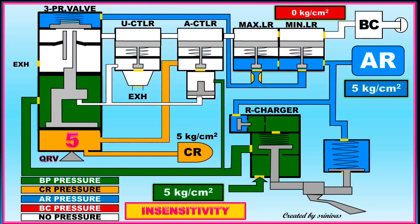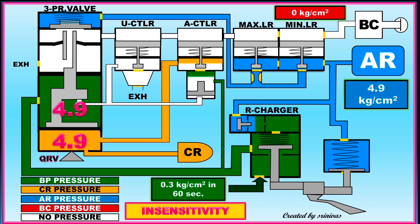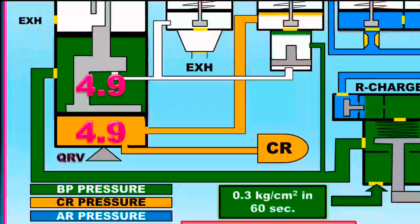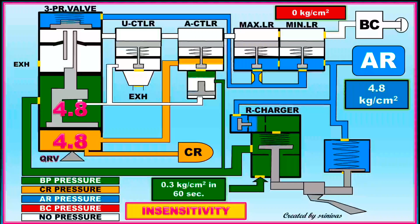Insensitivity. For each DV — that is, for each wagon — the BP pressure will drop by a certain percentage. Therefore, insensitivity has been designed in the DV to prevent brakes from being applied due to slight leakage. The test drops 0.3 kg per cm² over 1 minute at the rate of 0.1 kg per cm² every 20 seconds. As seen in this video, CR pressure and AR pressure go into BP pressure, equalizing BP, CR, and AR pressures so that brake application does not happen. This phenomenon is used in the DV as insensitivity.